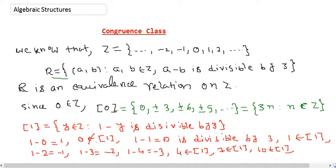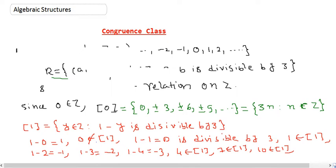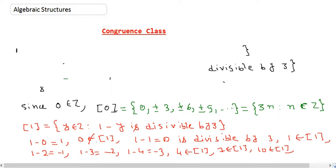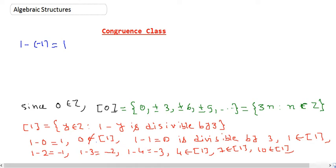Checking in the negative direction: what if I take minus 1? 1 minus (minus 1) is 2, not divisible by 3, so minus 1 is not in this class. What about minus 2? 1 minus (minus 2) is 3, divisible by 3, so minus 2 belongs to the class of 1.